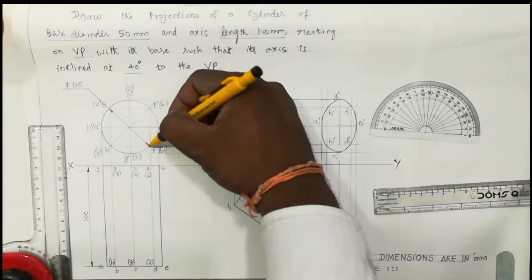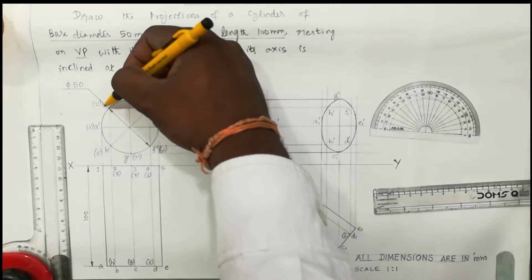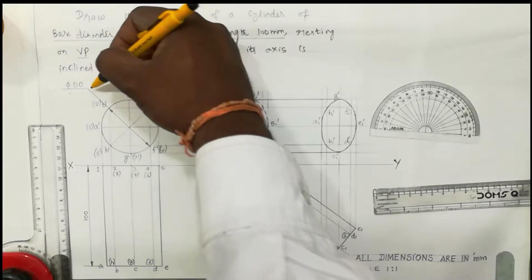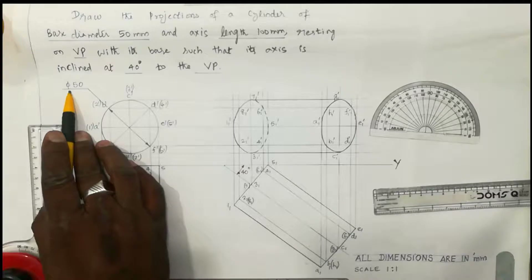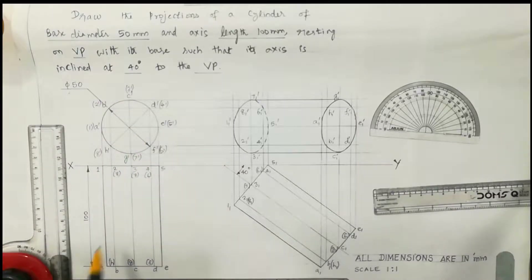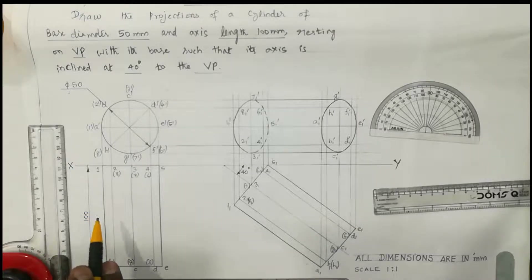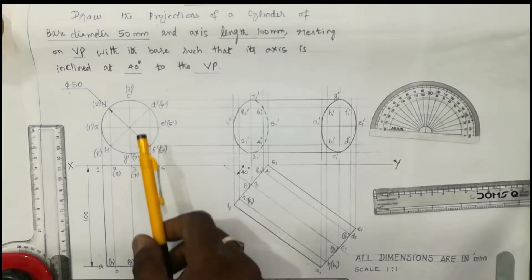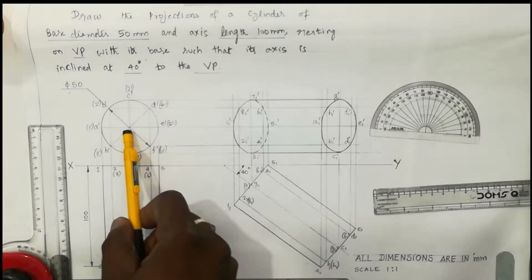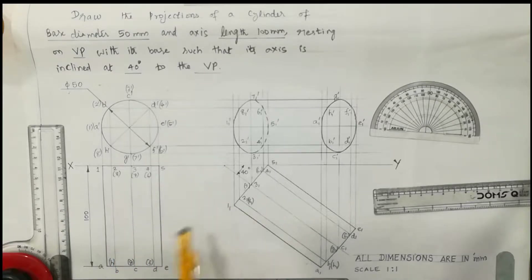Next, dimension marks are added. The circle diameter is given as 50 mm, so draw a leader line and write φ50 — φ (pi) is the notation used to indicate the diameter of the cylinder. The height or length of the cylinder is given as 100 mm. After constructing the simple portion front view and simple portion top view, we go for the final front view and final top view.